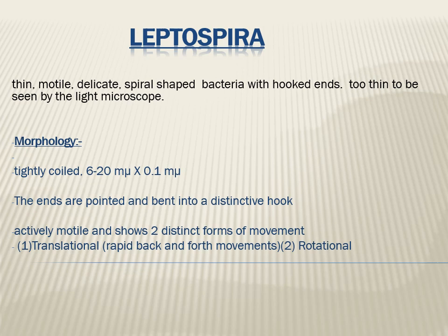Leptospira has hooked ends and is actively motile. It has endoflagella and exhibits two types of movements: translational as well as rotational movement.